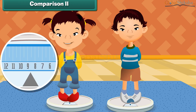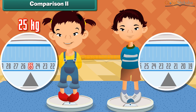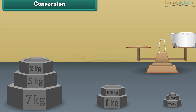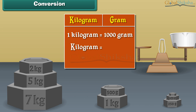Two children measure their weight. The weight of the first child is 25 kilograms and the weight of the second child is 22 kilograms. The weight of the first child is greater than the second one. The words kilogram and gram are used to express weight. One kilogram is equal to 1000 grams. Kilogram is also represented as kg, and gram is also represented as g.